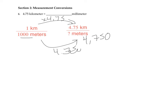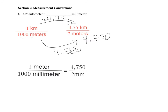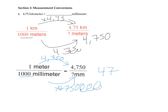But now we need to go from meters to millimeters. We know there are 1,000 millimeters in 1 meter. We have 4,750 meters, so we multiply by 4,750. Think about the three zeros — since there's a decimal at the end, we move it three times and put zeros into those spots. So your final answer is 4,750,000 millimeters.